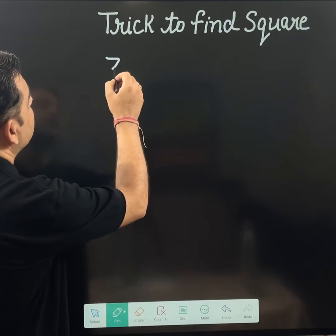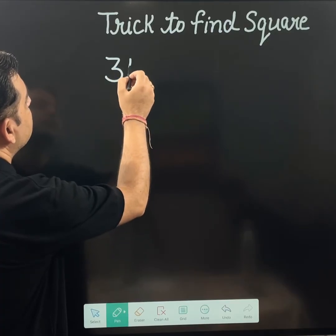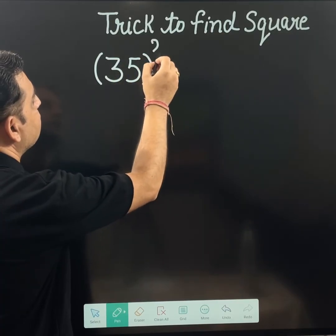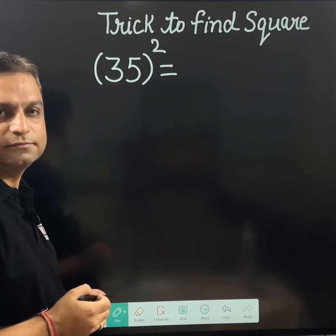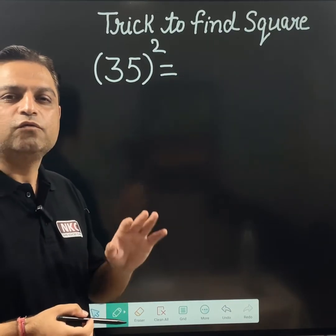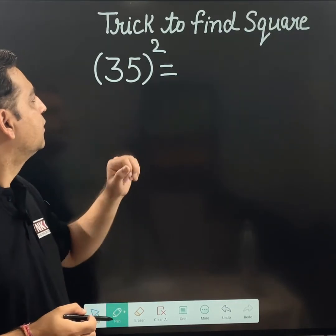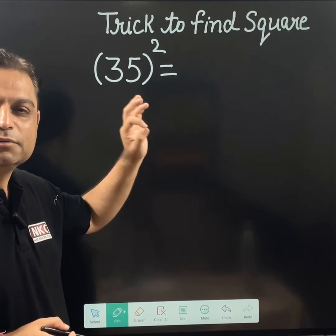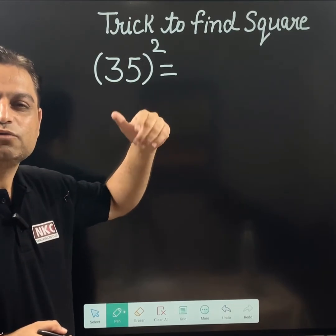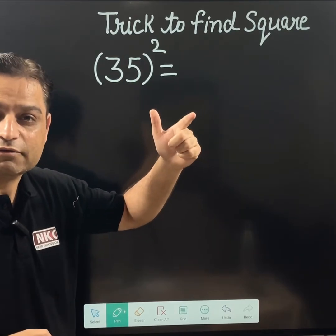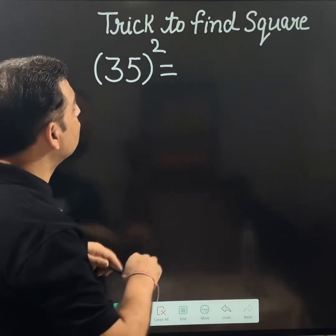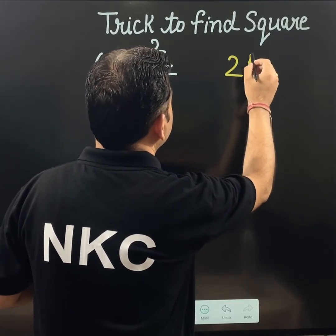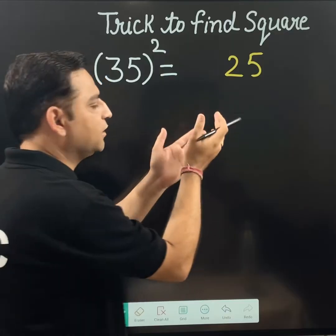Let's suppose you have the number 35 and you want to find the square of this number. First of all, remember that a number ending with 5 — since 5 squared is 25 — its square will always end with 25. So you can just write 25 at the end.